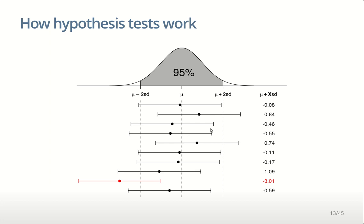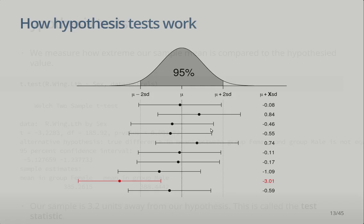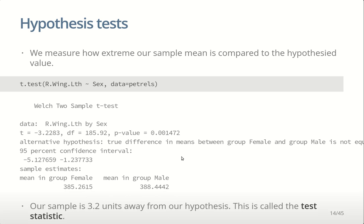We can tell how extreme each sample is by working out how far in terms of standard deviations we are away from the claim. Here one sample is three standard deviations away — we know that being three standard deviations away from the mean in a normal distribution is pretty extreme, so if this was our sample we'd conclude there's potentially some evidence against the claim.